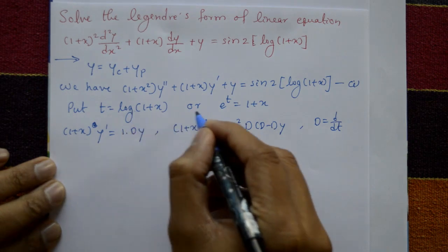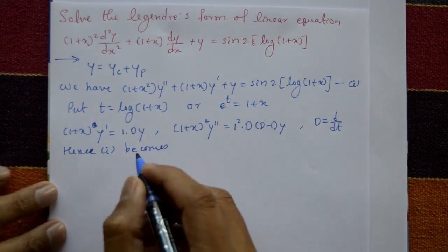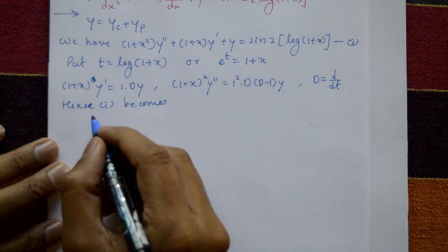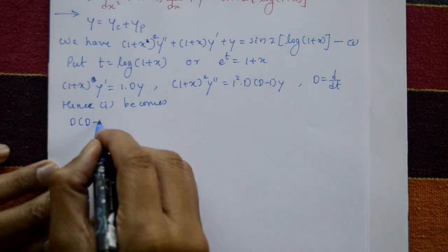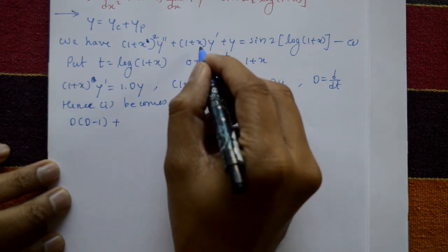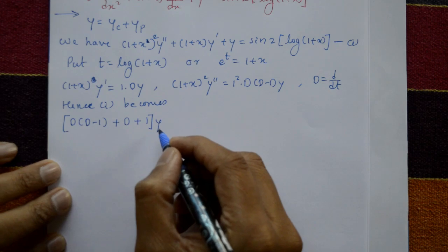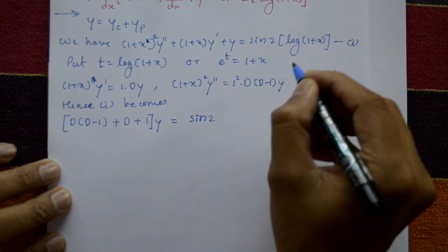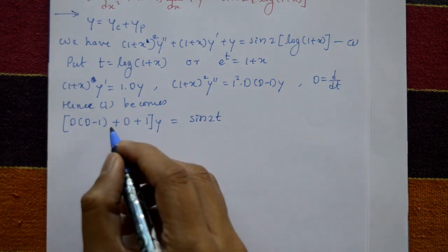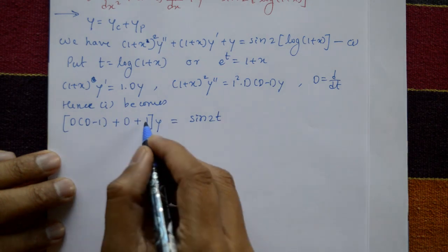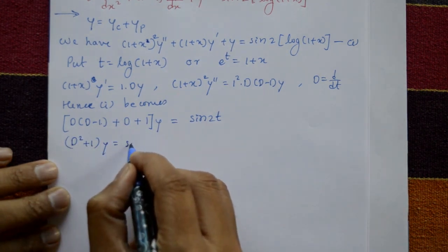Substituting these results into equation number 1: (1 + x)² y'' becomes D(D − 1)y, plus (1 + x) y' becomes Dy, plus y = sin²[log(1 + x)] = sin 2t. Opening the bracket: D² − D + D + 1, where −D and +D cancel, leaving D² + 1. So the equation becomes (D² + 1)y = sin 2t.